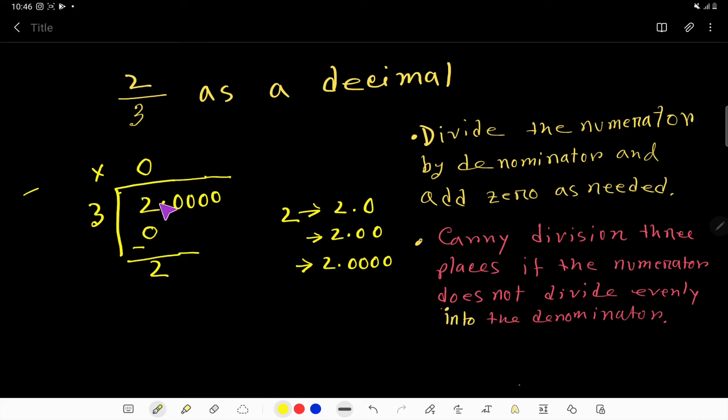After 2, we have decimal point. So, decimal point always goes to the top, that is, the quotient part.